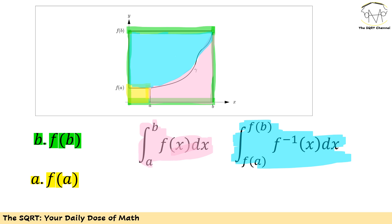On the other hand, a times f of a is going to be the area of the rectangle that I have in yellow. These two are easy.